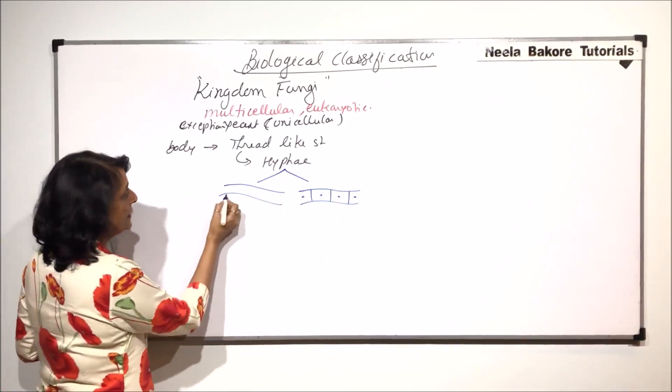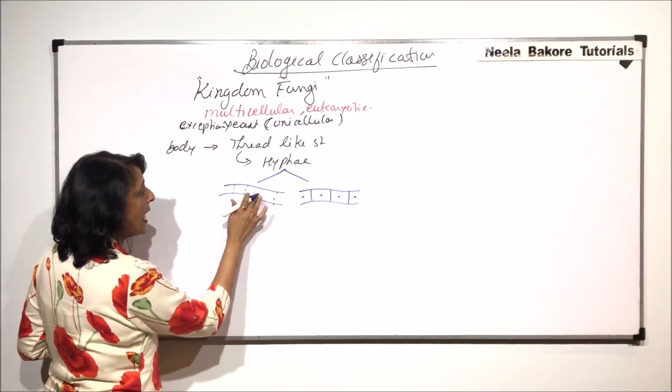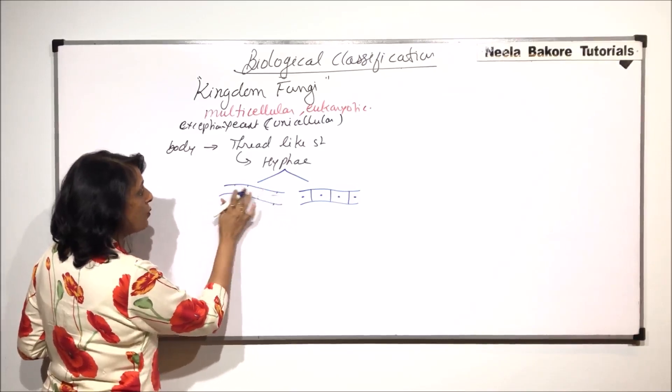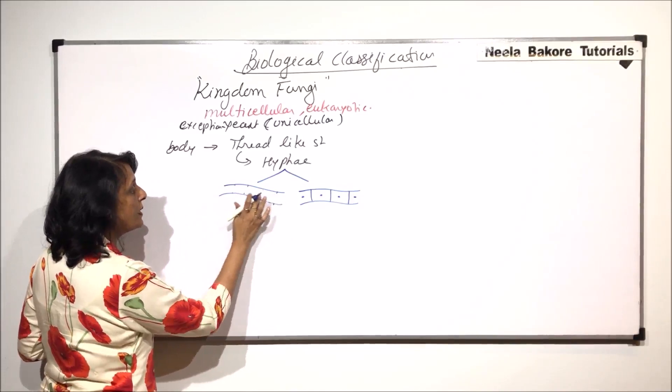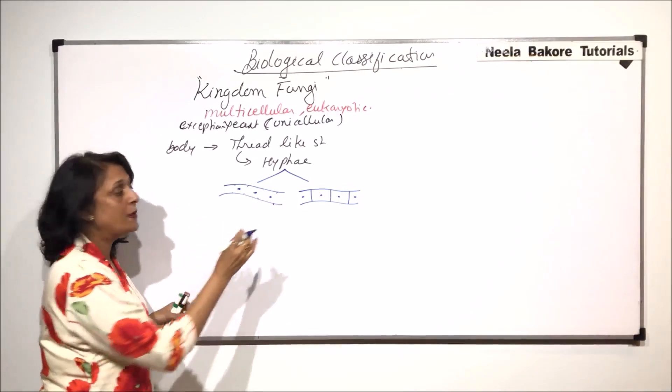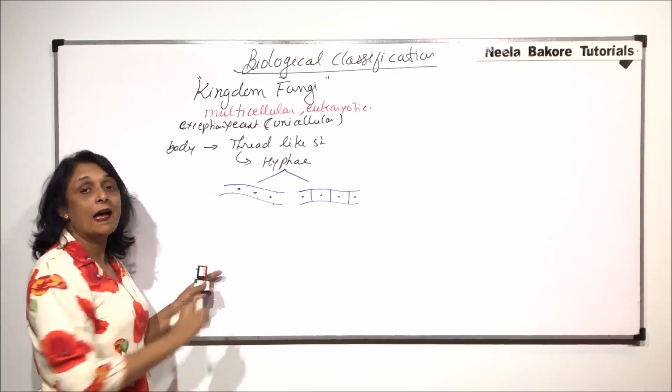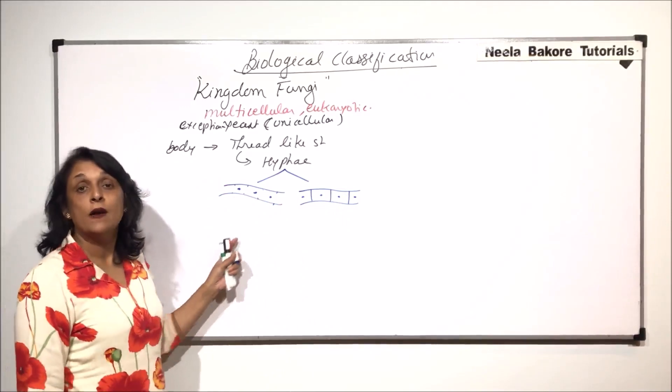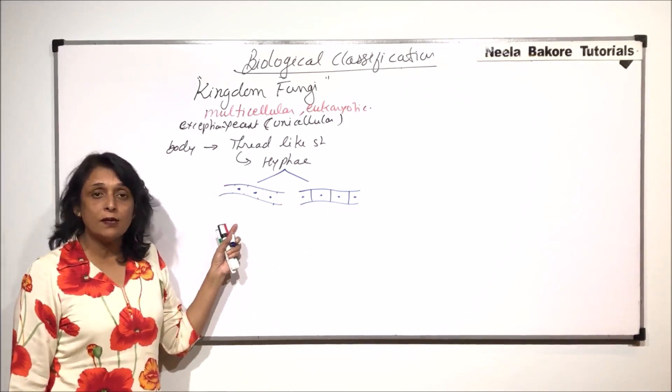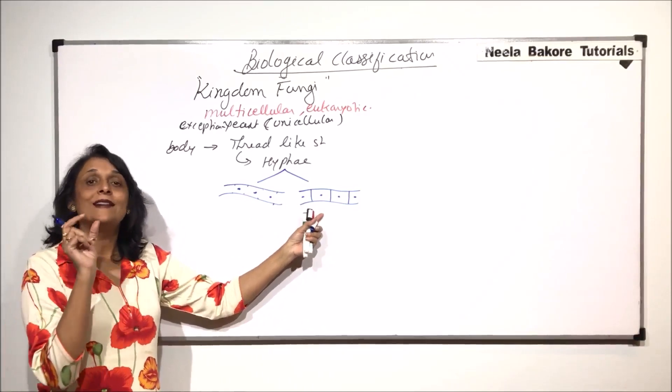Whereas in the other one, these septa which should have been there are not there. So what happens because of these septa being absent, the nuclei which would have been in each compartment, now they are seen everywhere. So this hyphae gives an appearance of a multi-nucleated structure, whereas here we see a uni-nucleated segment.